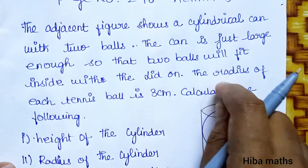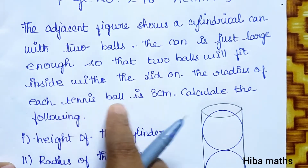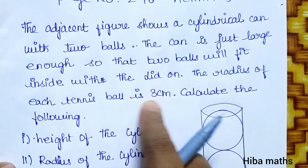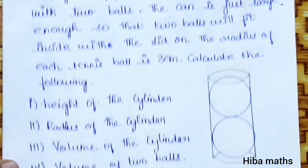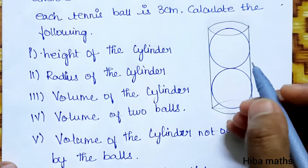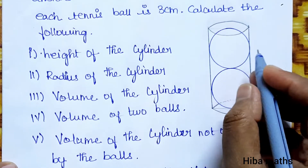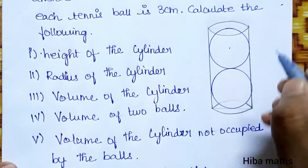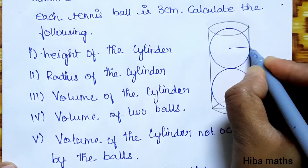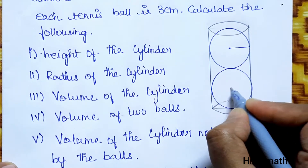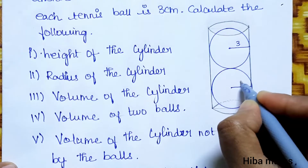The question gives us: the radius of each tennis ball is 3 cm. Calculate the following. There are six questions given. The radius of the cylindrical ball is also given as 3 cm.